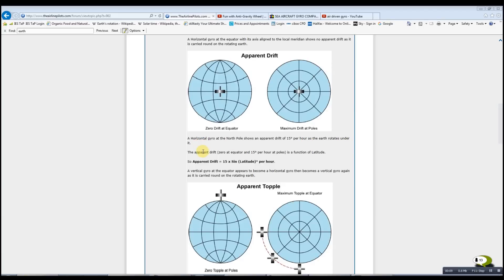So a horizontal gyro at the north pole shows an apparent drift of 15 degrees per hour as the earth rotates under it. The apparent drift, which is 0 at the equator and 15 degrees per hour at the poles, is a function of latitude. So the mathematical equation to work it out is 15 times the sine of your latitude in degrees per hour.